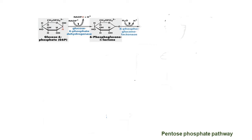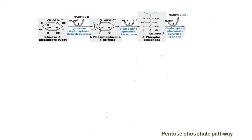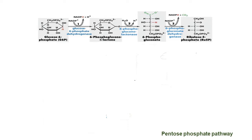In the first step, glucose-6-phosphate dehydrogenase enzyme oxidizes glucose-6-phosphate into 6-phosphoglucono-delta-lactone by reducing NADP into NADPH. In the second step, 6-phosphoglucono-lactonase hydrolyzes 6-phosphoglucono-delta-lactone into 6-phosphogluconate. In the third step, 6-phosphogluconate dehydrogenase converts 6-phosphogluconate into ribulose-5-phosphate by reducing NADP into NADPH.